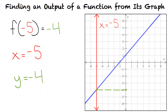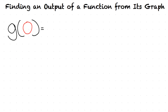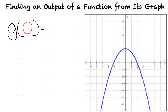But wait — we only looked at an example of a linear graph. What happens if we had a different type of graph, like a parabola? Even if we had a different type of graph, our method would still be the same. Let's use the example problem: finding g of 0 based on our graph.